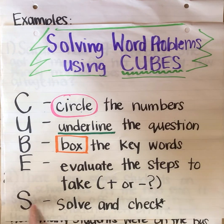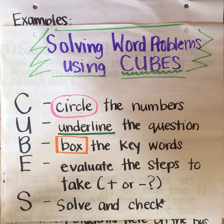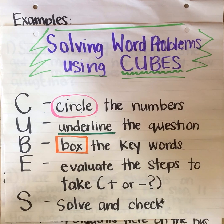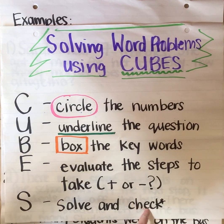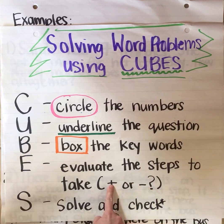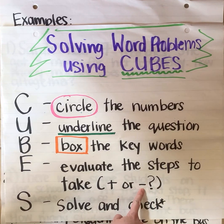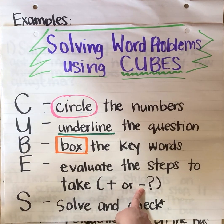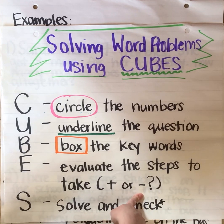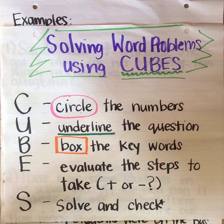And the last one, S, is solve and check. So you solve either the addition or the subtraction question and give the answer. Then to check your work you can use the opposite operation. So if it was an addition question you could use subtraction to check your answer, and if it was a subtraction question you could use addition to check your answer.